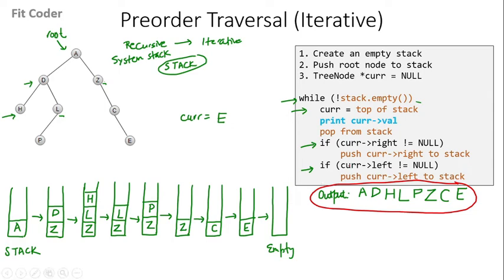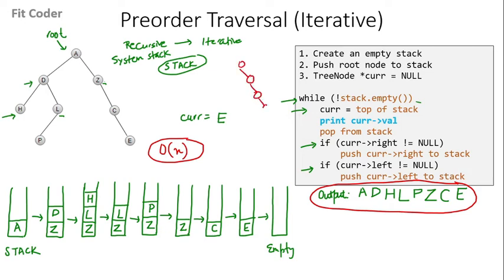One important thing to note here is we first push the right child to the stack and then we push the left child to the stack. This is because when we pop from the stack, we pop in reverse order — so first we pop the left, then the right. The time complexity of this pre-order traversal is O(n), where n is the number of nodes in the tree, because all nodes can be aligned in one direction where the tree height equals the number of nodes.